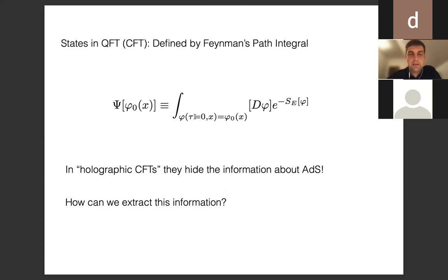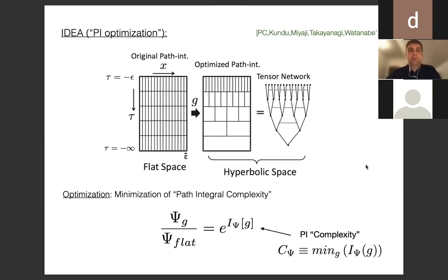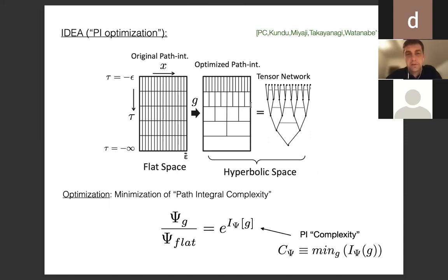This brought us to the proposal of so-called path integral optimization, proposed in 2017. The idea was largely motivated by the interplay between AdS/CFT and tensor networks, but I'll describe it in a way that doesn't require too much knowledge of tensor networks, so I won't define precise correspondences or details.